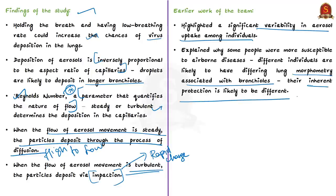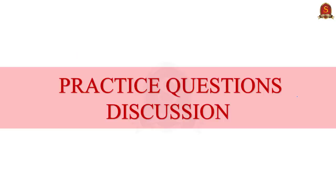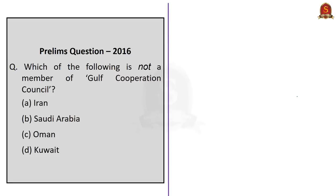With this, we come to an end of today's daily Hindu news analysis. Let us now move on to practice questions. When it comes to preparing for international organizations, we have a lot of previous year questions. In 2016, UPSC asked: 'Which of the following is not a member of the Gulf Cooperation Council?' — Option A: Iran, Option B: Saudi Arabia, Option C: Oman, Option D: Kuwait. As you can see, Iran is the odd man out. Iran is not a member of the Gulf Cooperation Council. The next question: 'Which of the following countries is not a part of the Persian Gulf region?' — Option A: Bahrain, Option B: Qatar, Option C: Yemen, Option D: UAE. The right answer is option C, Yemen.